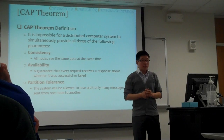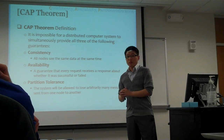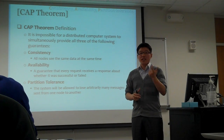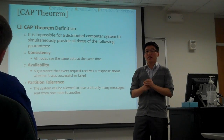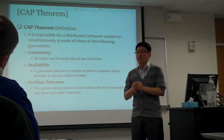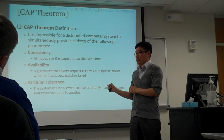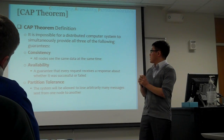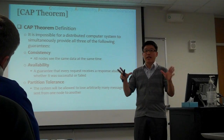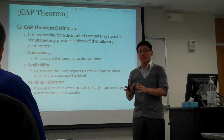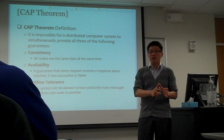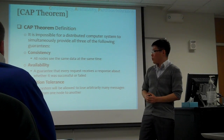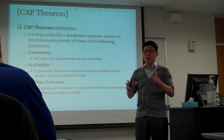According to the CAP theorem, it is impossible for a distributed system to provide availability, consistency, and partition tolerance at the same time. In other words, the distributed system can satisfy any two qualities, but not all three at the same time. A system is consistent if and only if all nodes see the same data at the same time. A system is available if there is a guarantee that every request receives a response. And a system is partition tolerant if the system will allow message loss.